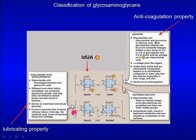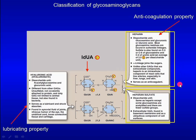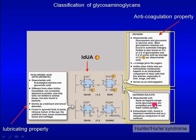Among these, heparin and heparan sulfate are clinically important. Heparin is produced and stored inside mast cells and serves as an anticoagulant. Heparan sulfate builds up in Hunter and Hurler syndrome.